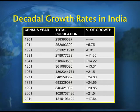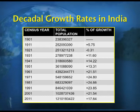Now look at the table on screen showing decadal growth rates in India. There are three columns: one showing the census years, the second showing total population for the corresponding year, and the third showing the percentage of growth. In 1921 there was a negative growth of 0.31%, while all other census years show positive growth, with the 2011 census showing 17.6% growth.